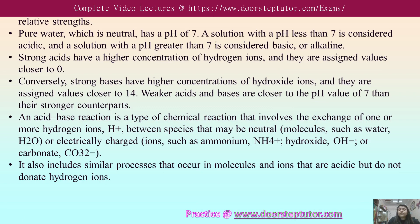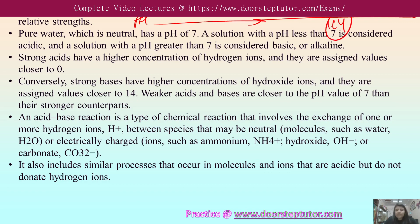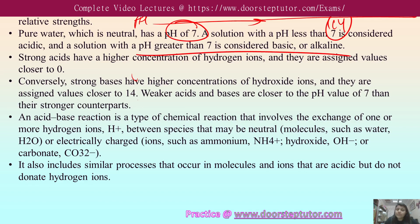Acids and bases are assigned a value of 0 to 14 on the pH scale. Acids have the lowest pH values and bases have the highest. For example, a pH value of nearly 1 means the solution is very acidic, and a pH of 14 means it is basic. Pure water has a pH of around 7. A solution with pH less than 7 is acidic, and greater than 7 is basic.